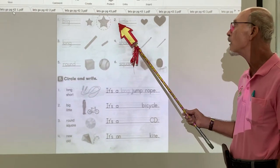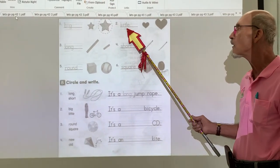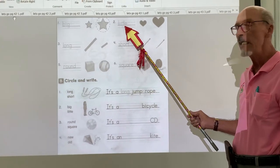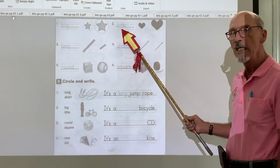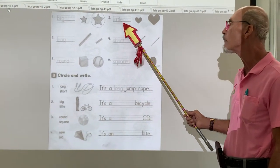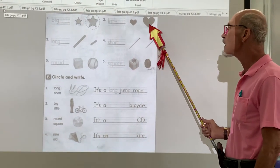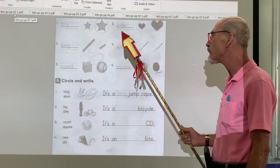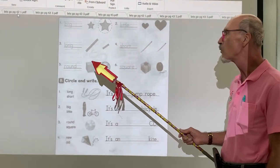Number two, little. L-I-T-T-L-E. Little. And which one of these is little? You want to draw a circle around that. Which one of these is little?